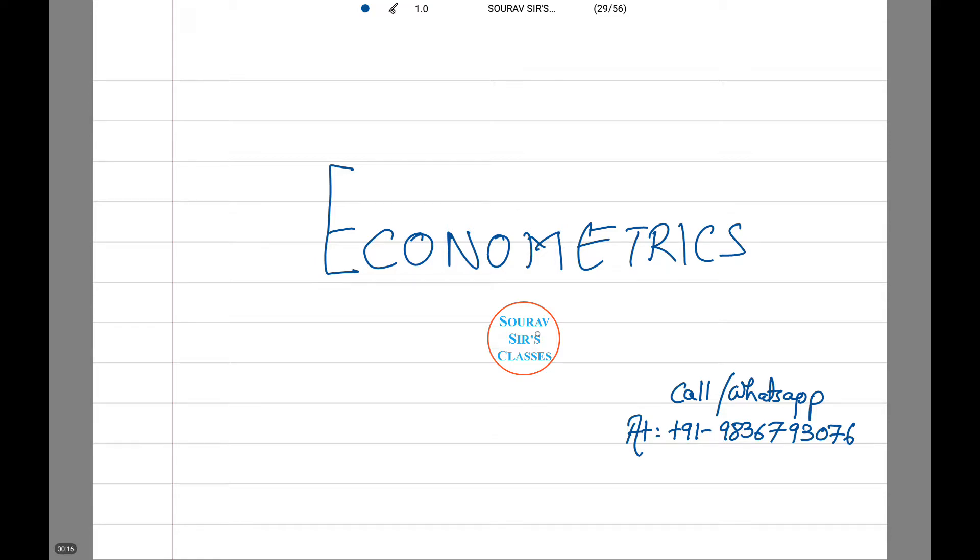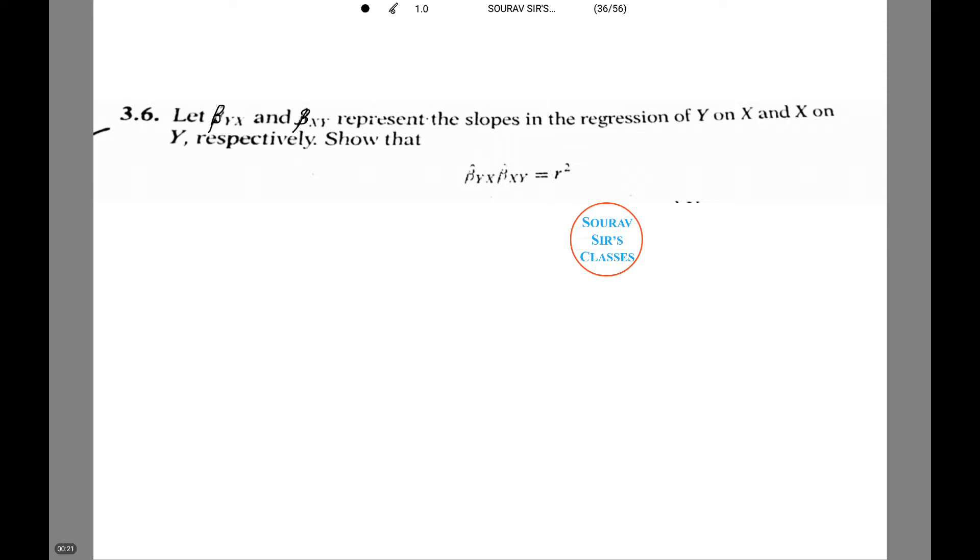Let's see our first sum. The first question is let beta y x and beta x y represent the slopes in the regression of y on x and x on y respectively. Let us show beta y x into beta x y equals to r square.